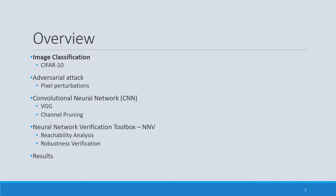Today we're going to start by talking about the task ahead: image classification using the CIFAR-10 dataset. Then we're going to explain adversarial attacks and the specific adversarial attack used in this work, a little bit about convolutional neural networks and pruning, and then we're going to talk about the robustness verification work we're doing using NMV.